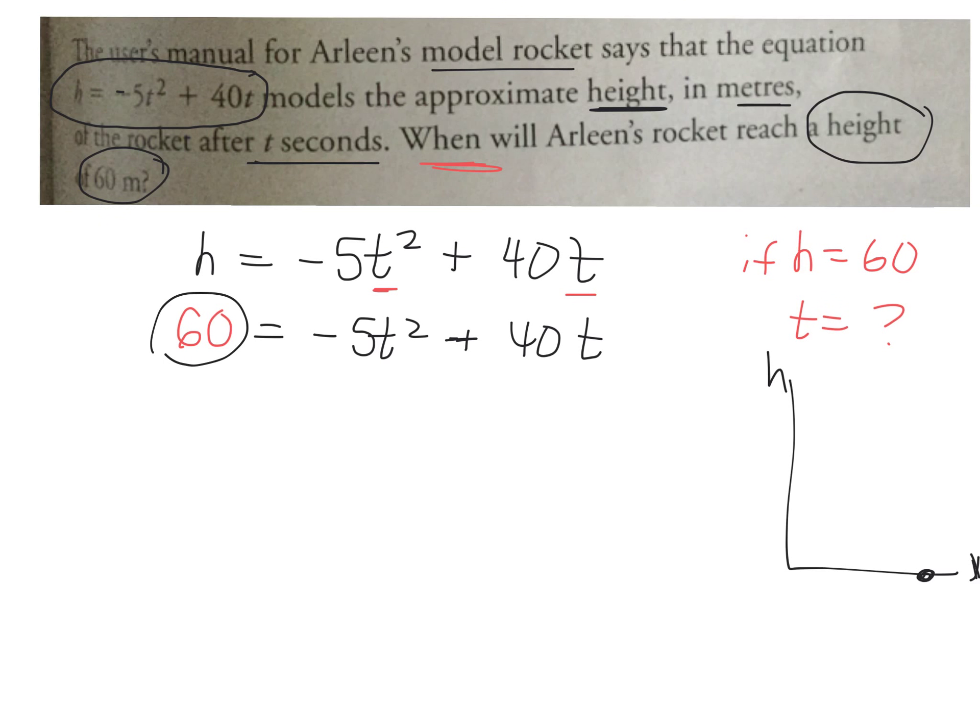Bring this to the other side. So take away positive 60, what does it become? Take away 60. So I'll have one side equal to 0. So negative 5t squared plus 40t minus 60 equals 0. And we're finding t. We're finding how long it takes for the height to be at 60. So solve for t using quadratic formula.